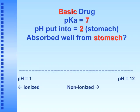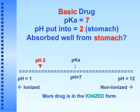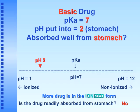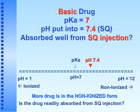Problem 4: basic drug, pKa = 7, placed in the stomach at pH 2. More of the drug is in the ionized form — hydrophilic. Is the drug readily absorbed from the stomach? No — because it's hydrophilic and we need it to be lipophilic to cross the membrane in the stomach. Similarly, can we absorb this basic drug from subcutaneous injection? No — because we've got a lipophilic drug in a hydrophilic environment. We'll work on more of these Thursday night.